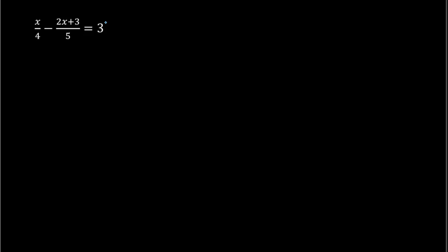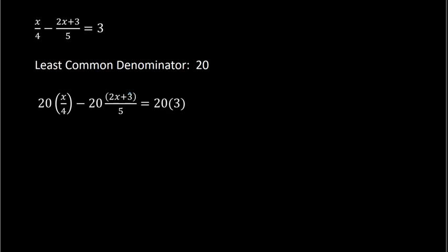Here's another example where now we have multiple terms in the numerator. Still the same process — we have denominators of 4 and 5, and the least common denominator of 4 and 5 would be 20. So I multiply everything by 20. For the first term, 20 divided by 4 cancels to give me 5. The second term, 20 divided by 5 gives me 4. And 20 times 3 would be 60. So we have 5x minus 4 times (2x plus 3) equals 60.